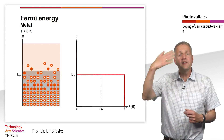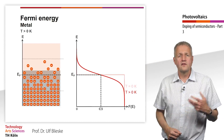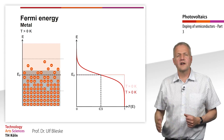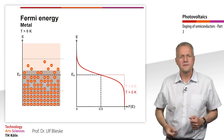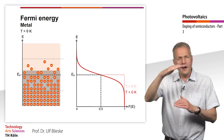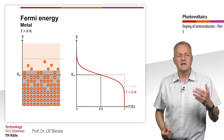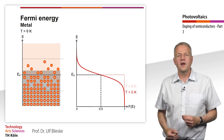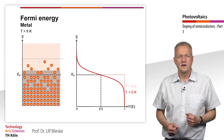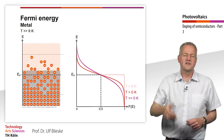With increasing temperature, the electrons also assume states with higher energy. Thus, the Fermi-Dirac function runs more continuously. The electrons distribute themselves around the Fermi level. The Fermi energy is the energy where the occupation probability is exactly 50%, and with increasing temperature, the Fermi-Dirac function changes accordingly.